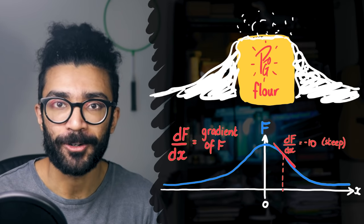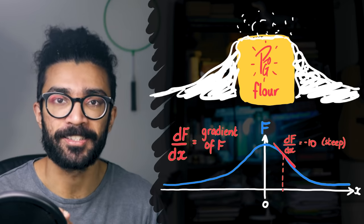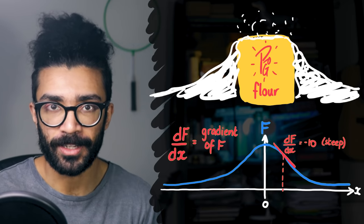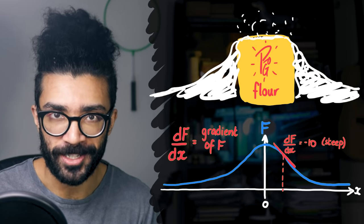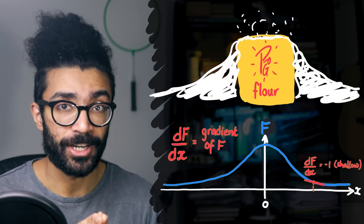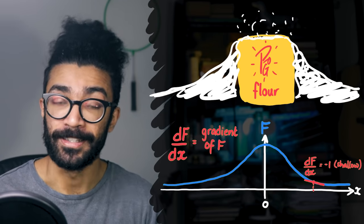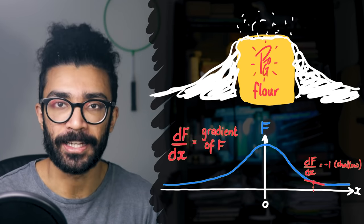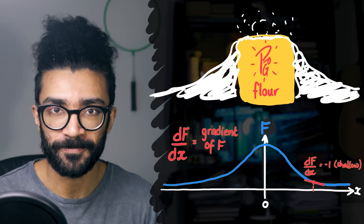Over here, for example, our flour distribution drops off very quickly, so the gradient is steep. Hence, df by dx has a large size, and is negative because the flour is decreasing. Whereas in this region, the amount of flour is not changing a huge amount. Therefore, the gradient is shallow, and df by dx has a small magnitude, and is again negative because the flour is decreasing as we move from left to right.